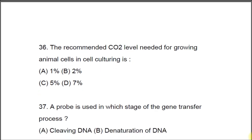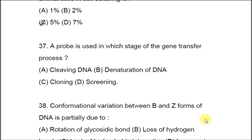Question 36: The recommended CO2 level needed for growing animal cells in cell culture is A) 1%, B) 2%, C) 5%, D) 7%. The correct answer is C, 5%. Question 37: A probe is used in which stage of the gene transfer process? A) cleaving DNA, B) denaturation of DNA, C) cloning, D) screening. The correct answer is D, screening.